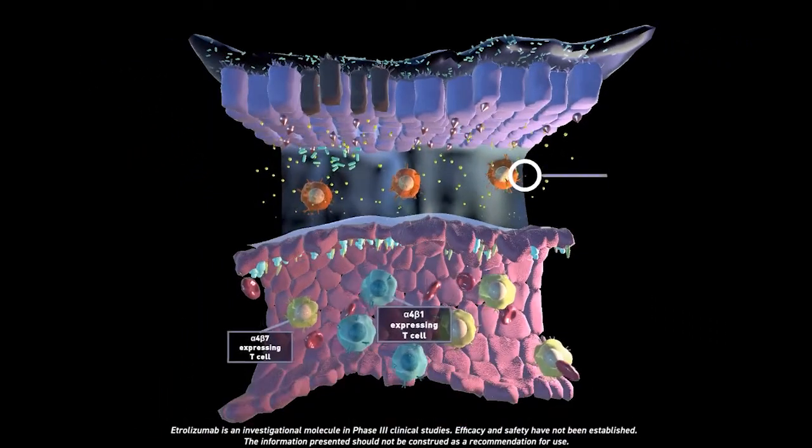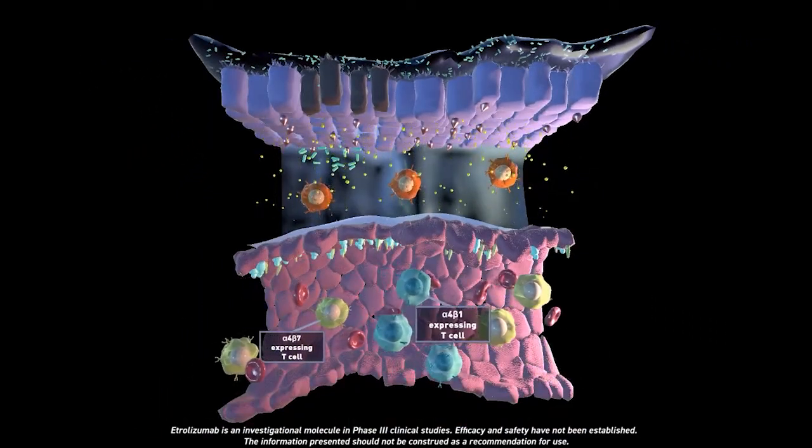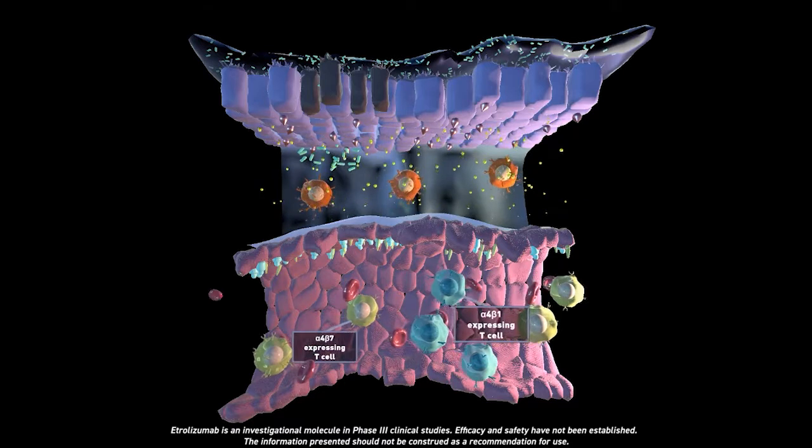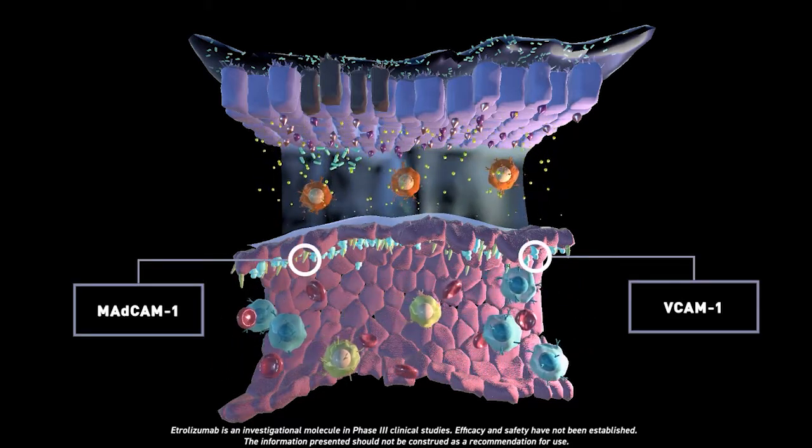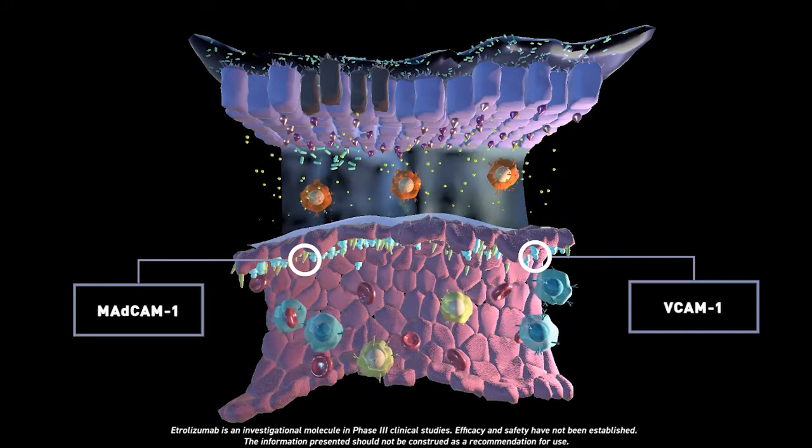Cytokine secretion causes an increase in circulating immune cells, such as T cells, that home to the gut. Additionally, cytokines upregulate the expression of MADCAM1 and VCAM1 on blood vessels.